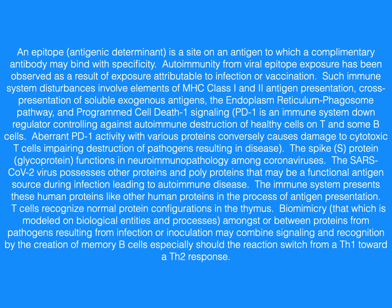The spike S protein glycoprotein functions in neuroimmunopathology among coronaviruses. The SARS-CoV-2 virus possesses other proteins and polyproteins that may be a functional antigen source during infection, leading to autoimmune disease. The immune system presents these human proteins like other human proteins in the process of antigen presentation. T cells recognize normal protein configurations in the thymus. Biomimicry amongst proteins from pathogens resulting from infection or inoculation may combine signaling and recognition by the creation of memory B cells, especially should the reaction switch from a Th1 towards a Th2 response.